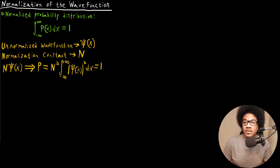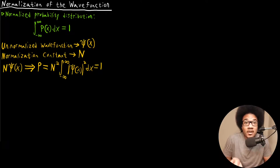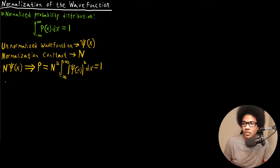Now you might be saying: if we multiply this number by the wave function, doesn't that change the wave function? And technically yes, it changes the wave function, but it's actually still a valid solution to Schrödinger's equation. I'll show that right now.